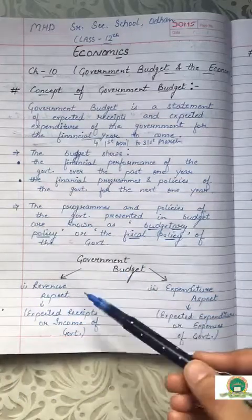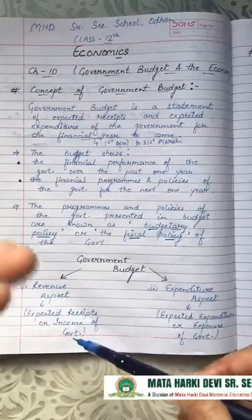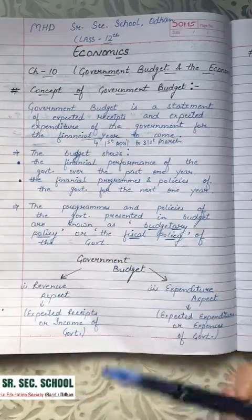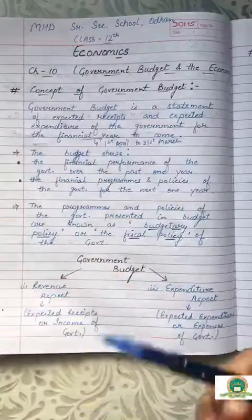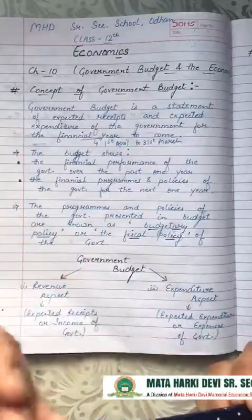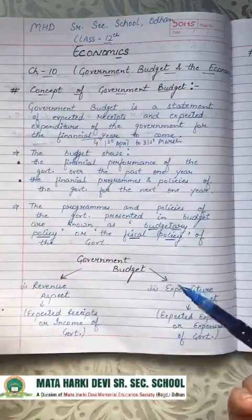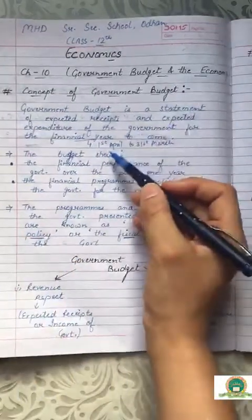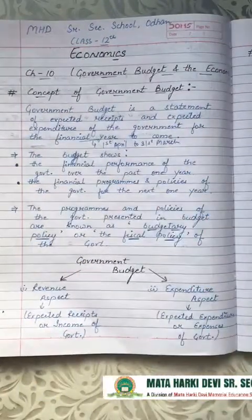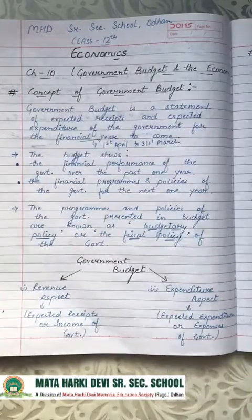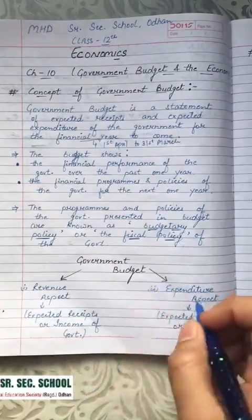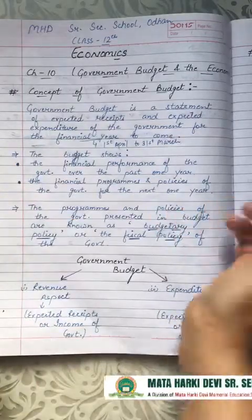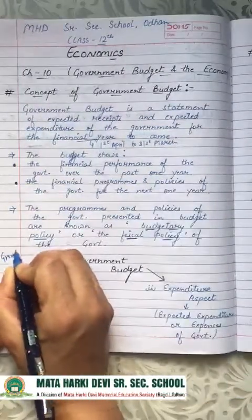Revenue covers all expected receipts — the estimation of where income will come from. Expenditure covers expected expenses — where the government is likely to spend. Together these two form the budget. The financial year here is from 1st April to 31st March.